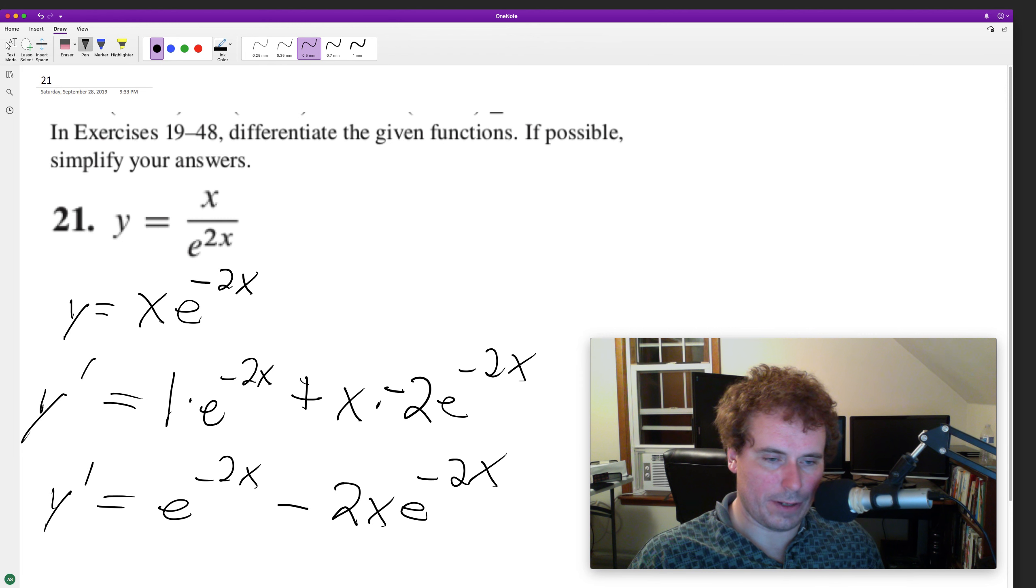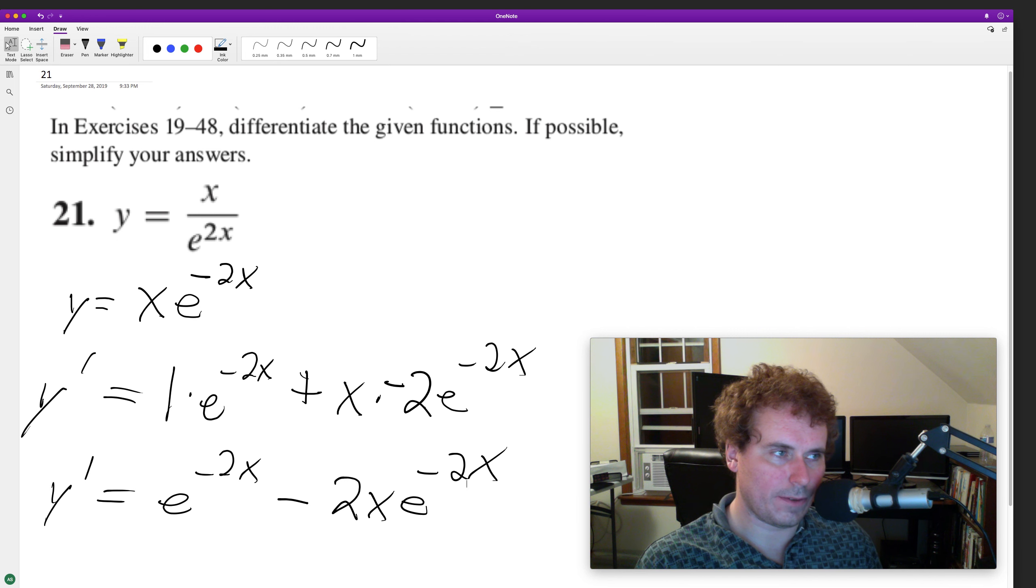And if we factor here, we can factor out an e raised to the negative 2x, and then we end up with just 1 minus 2x.